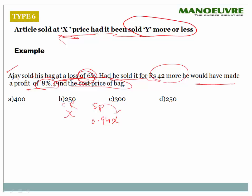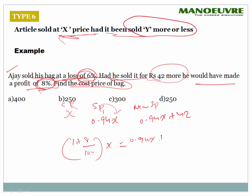New SP = 0.94X + 42, and this new SP gives 8% profit, so 1.08X = 0.94X + 42. Therefore 0.14X = 42, giving X = 42/0.14 = 4200/14 = 300. Cost price is 300 rupees.